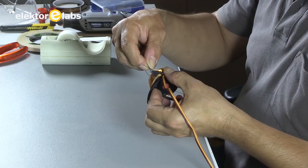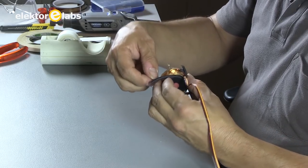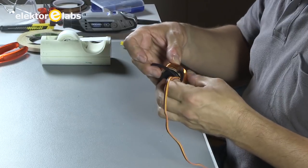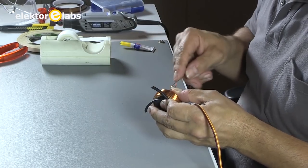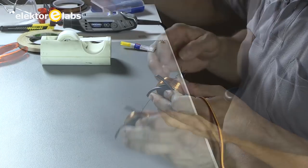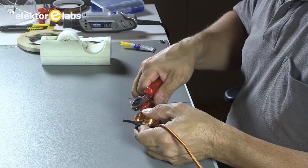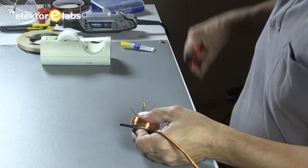Hang in there, it's almost over. Cut the wire off at about 5cm (that's 2 inches) from the end of the last turn.